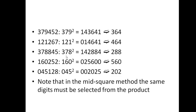What matters most is uniformity: if you take the first three digits for one key, you must take the first three digits for all keys.